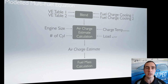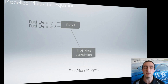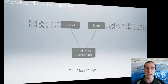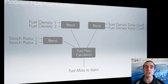The ECU then determines the correct amount of fuel for the current amount of air. To do this, it looks at the current blend and the fuel density for the primary fuel (petrol) and secondary fuel (ethanol), mixing those density values depending on the current blend from the content sensor. The same logic applies to the fuel density temperature coefficient, since different fuels also change their density differently depending on temperature, allowing more accurate fueling. Additionally, the stoichiometric ratio is blended — different fuels run different stoichiometric ratios, and the ECU blends these to get the correct ratio for the current fuel mixture.